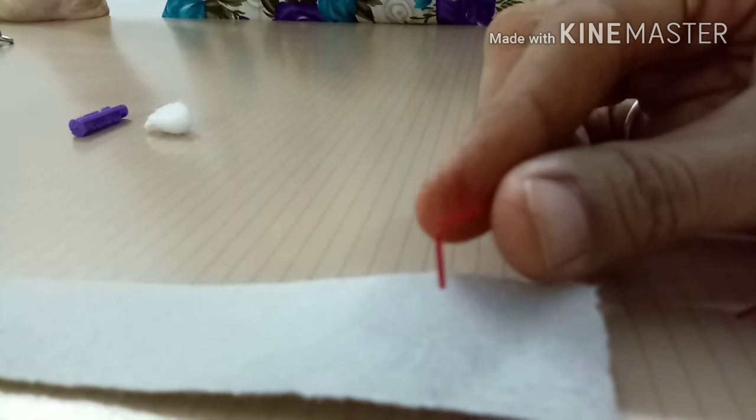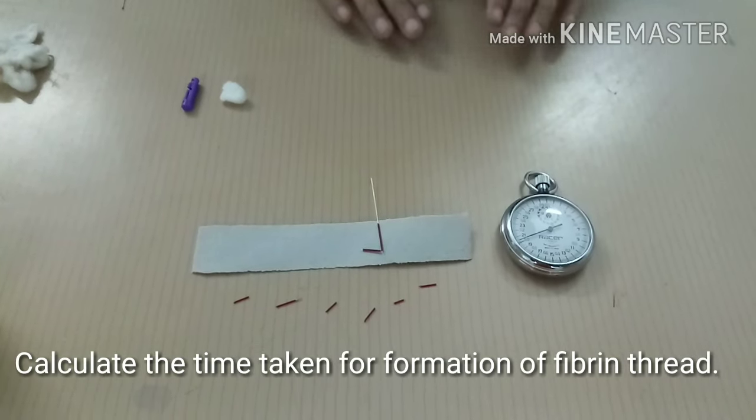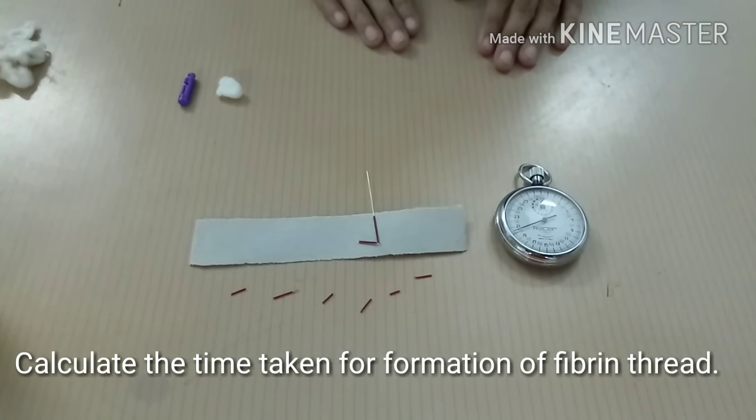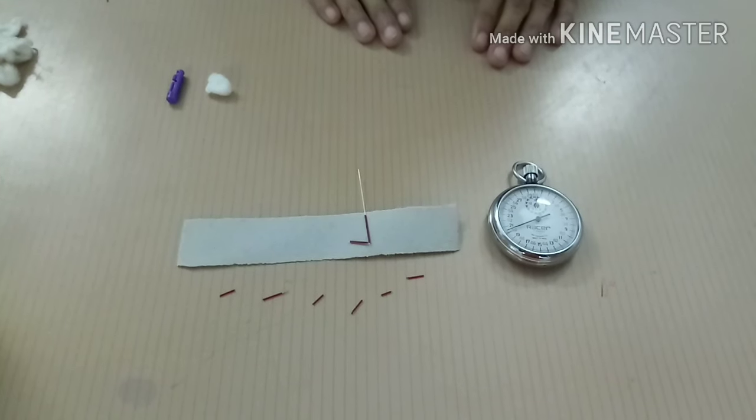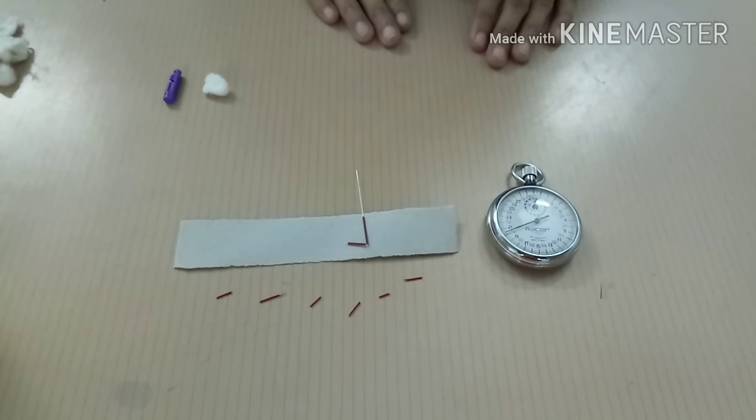This is the fibrin thread. Calculate the time and that is our clotting time. Note that clotting time is always longer than bleeding time.